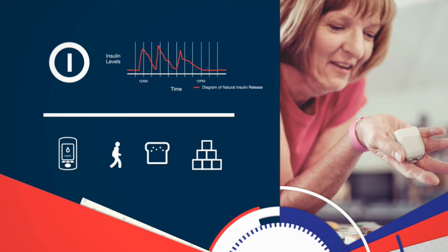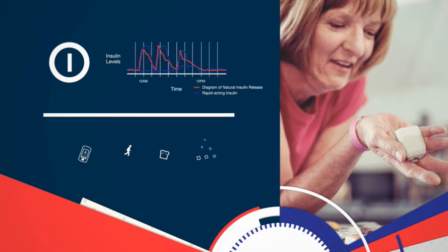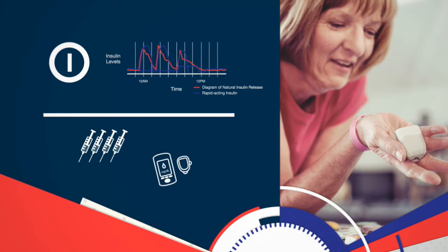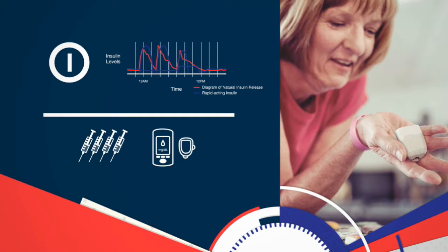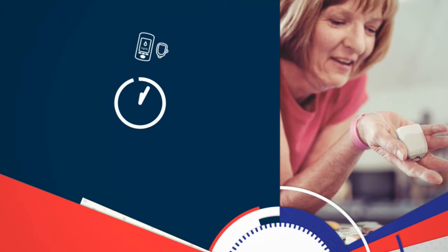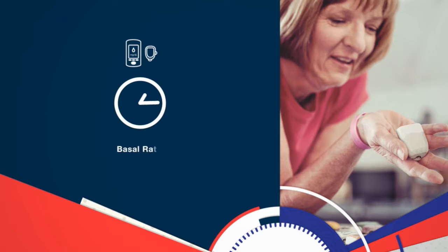Because your pancreas has limited or no ability to produce insulin, you must deliver insulin directly to your body using multiple daily injections of insulin, or an insulin pump, to manage your diabetes. One part of treatment with an insulin pump consists of a small amount of insulin being delivered continuously for a period of time, similar to what the pancreas does. This amount is called a basal rate, and it's measured in units per hour.